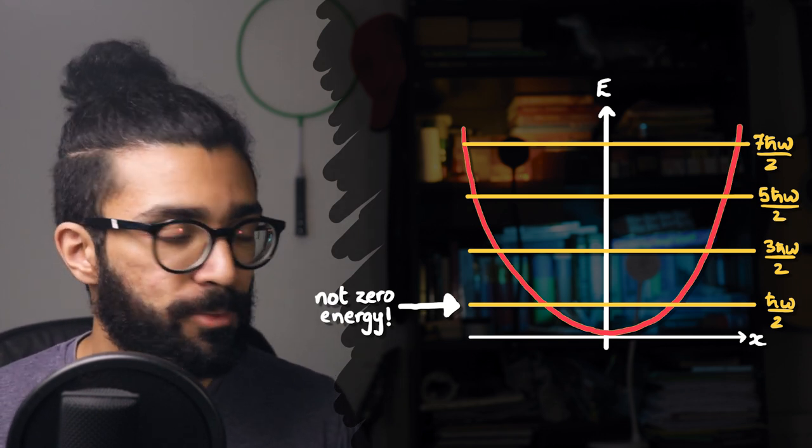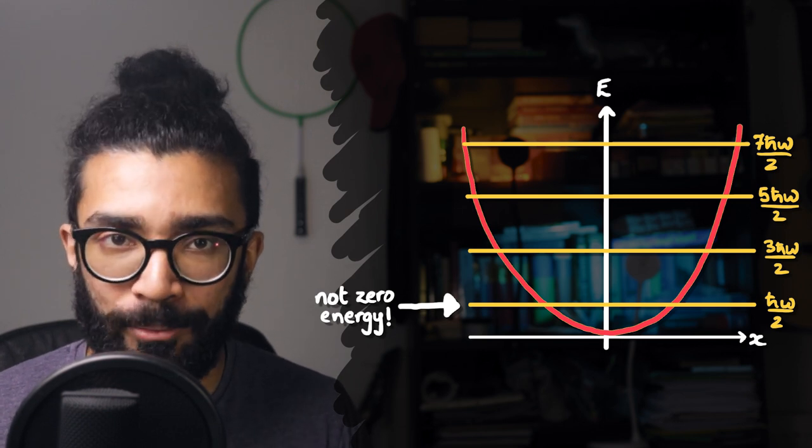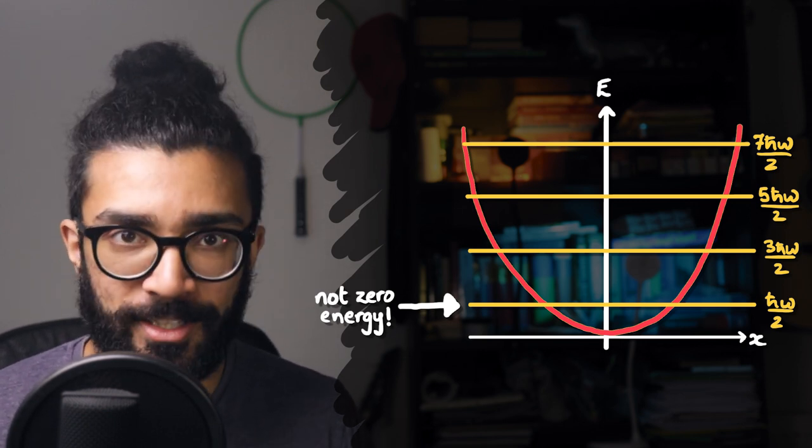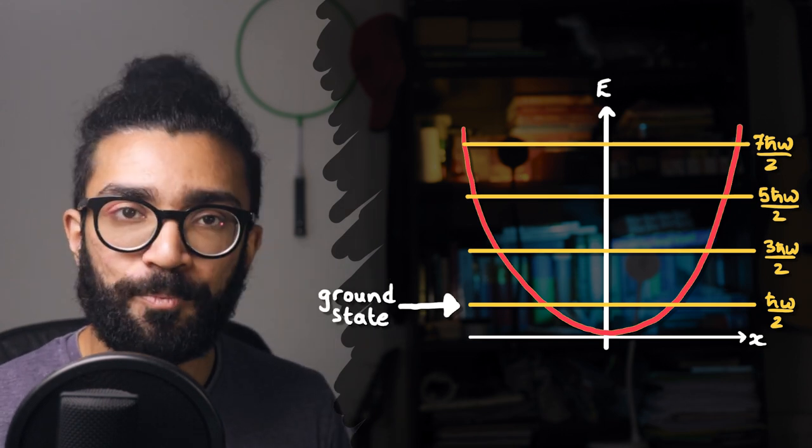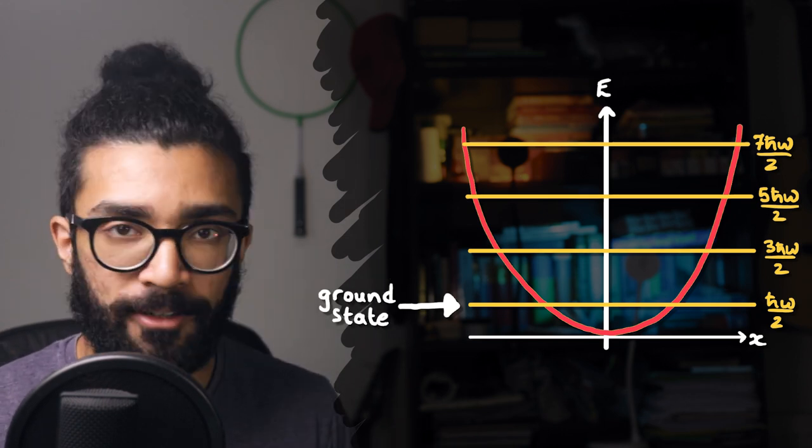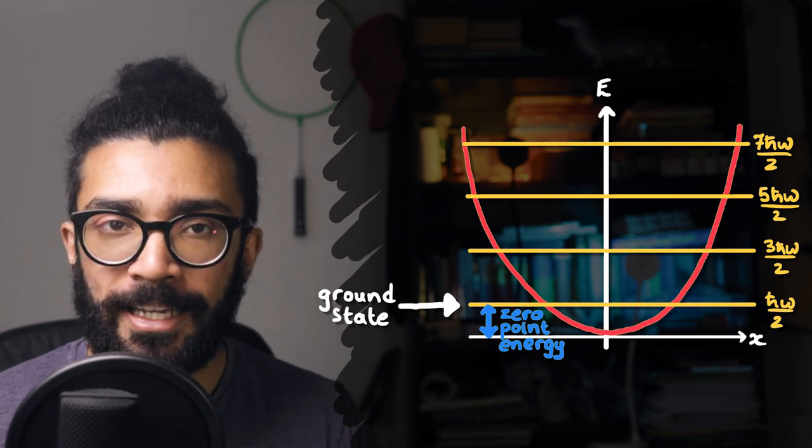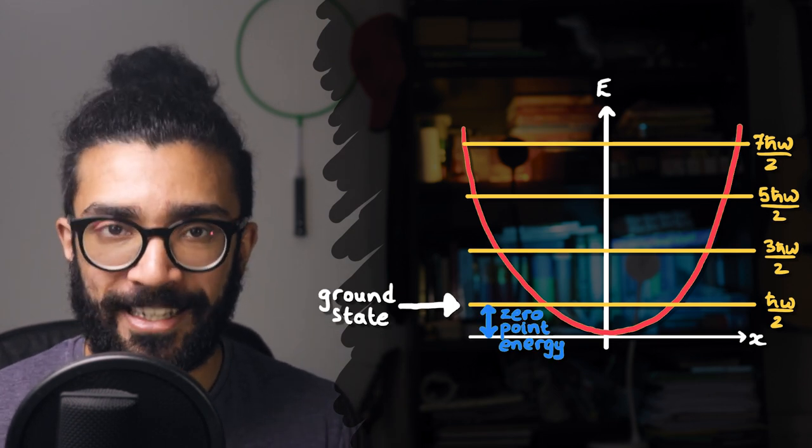In other words, a quantum system in a quadratic potential well must have a minimum amount of energy that is not zero. This lowest possible energy level is known as the ground state, and the energy difference between that energy level and the bottom of the quadratic potential well is known as the zero-point energy.